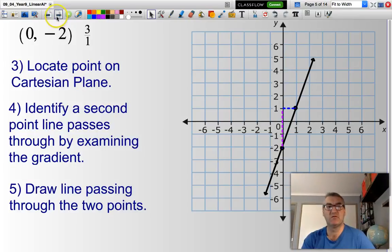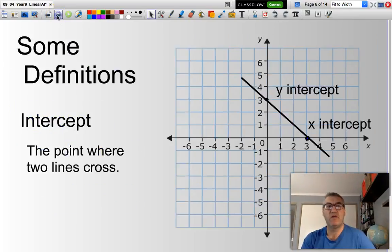Now, let's look at a new method. Where a line goes through the y-axis, it's commonly referred to as the y-intercept.